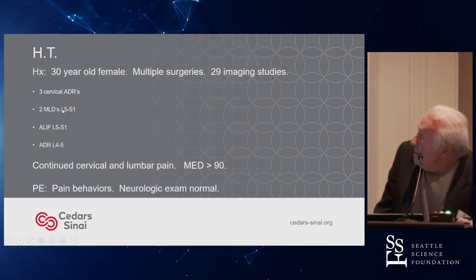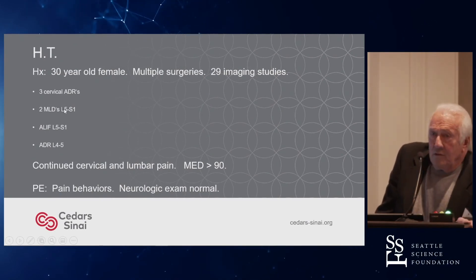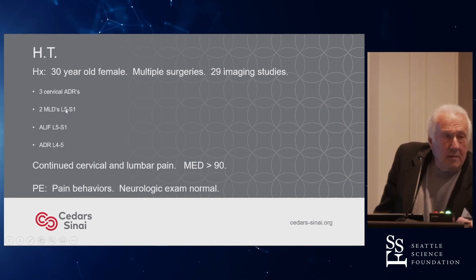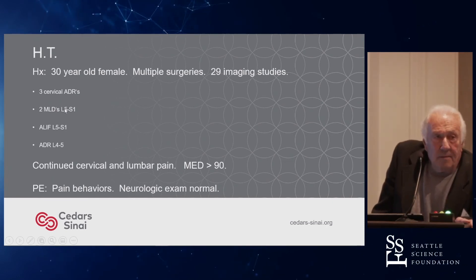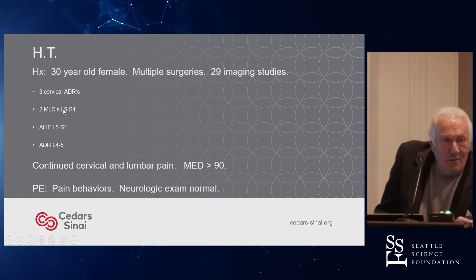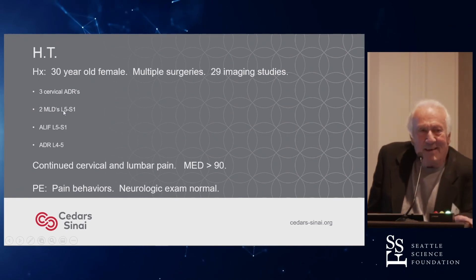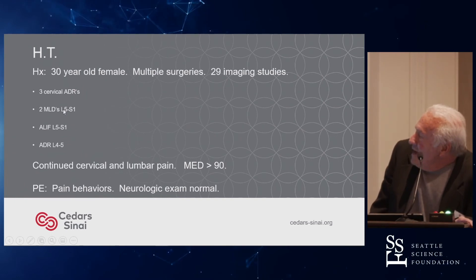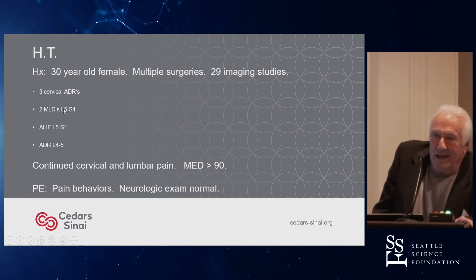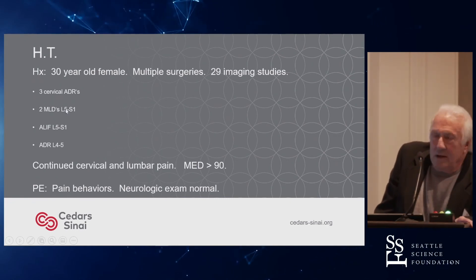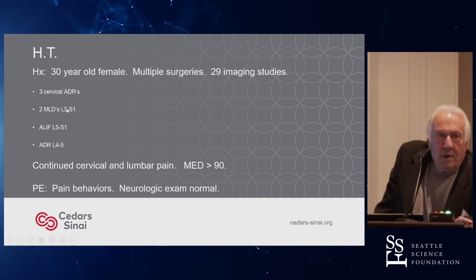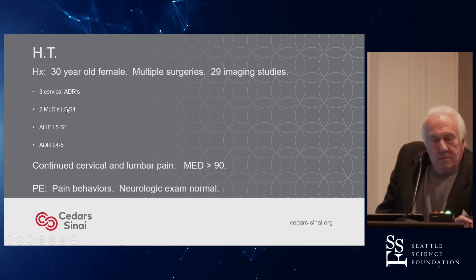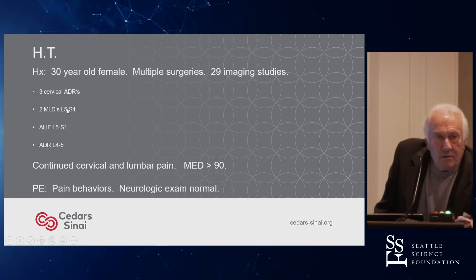This is a 30-year-old female who has had 29 imaging studies in the past two years — a clue to the pain management guys. She's had three cervical ADRs that had to be revised, two microdiscectomies at L5-1, eventually an ALIF at L5-1, and then an ADR at L4-5. Unfortunately, this is not as rare as you would hope. It's a horror story. I saw her for an opinion — she came in clearly a disabled human with her mother, who was clearly the enabler.